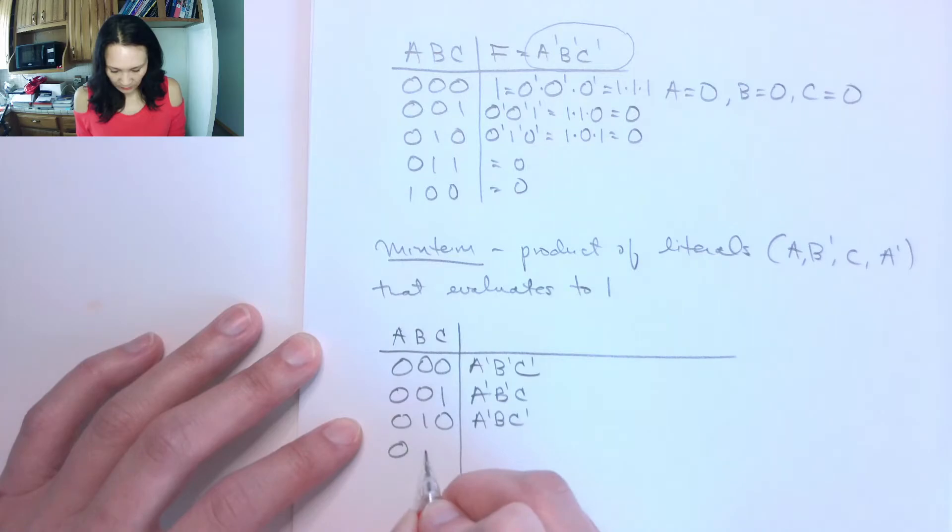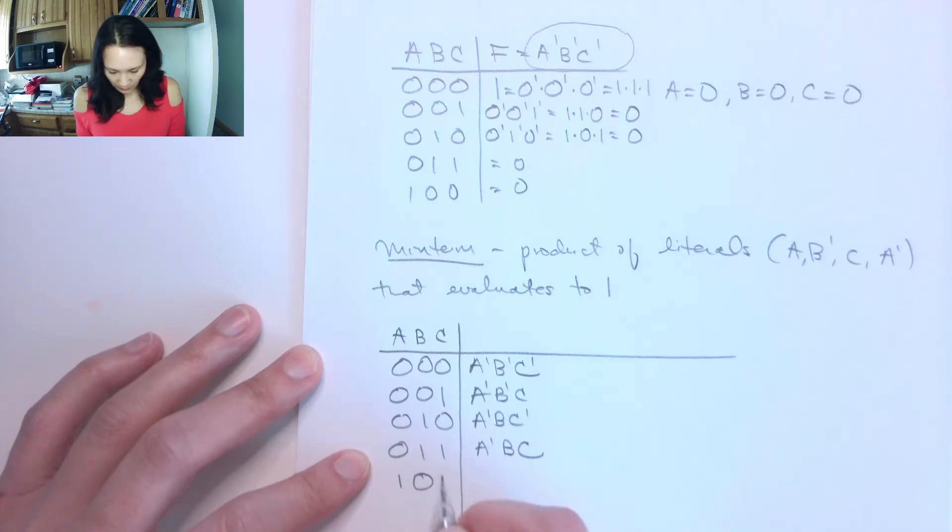If our inputs are 0, 1, 1, we would have A naught, B, C. If our inputs are 1, 0, 0, we would have A, B naught, C naught.